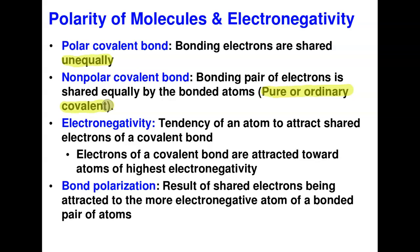Electronegativity is defined as the tendency of an atom to attract a shared pair of electrons to itself. Electronegativity increases as you go from left to right across the periodic table — non-metals towards the right have the ability to accept electrons — and it decreases as you go down a group.